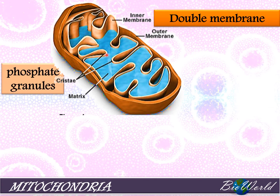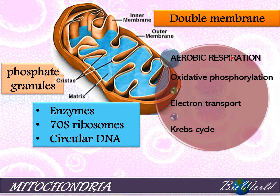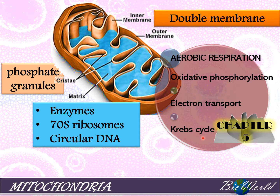In the membrane of the cristae, there are phosphate granules which are actually the enzyme ATPase. This enzyme helps in the synthesis of ATP. The matrix of the mitochondria contains more enzymes necessary for aerobic respiration, as well as 70S ribosomes and circular DNA. The major function of the mitochondria is aerobic respiration, which is made up of oxidative phosphorylation, the electron transport chain, and the Krebs cycle, which you will learn in detail in chapter 5.